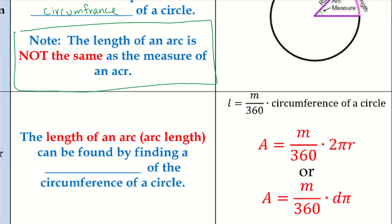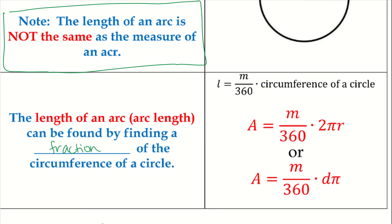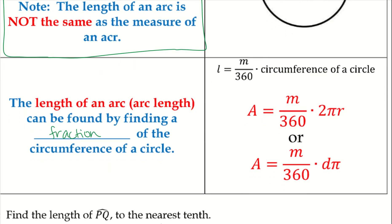The equations are set up very similarly. The arc length can be found by finding a fraction of the circumference of a circle: arc length equals M over 360 times the circumference. So the only thing that changes compared to our last equation is replacing the area formula with 2πR or Dπ.